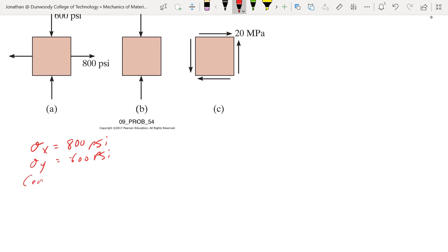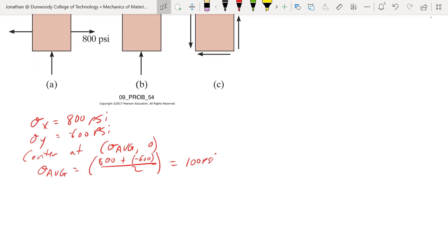And that's at sigma average and 0. 800 plus negative 600 over 2, that's 100 psi. So there you have our center point, that's the first bit we need.